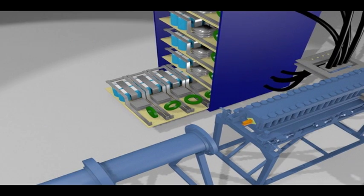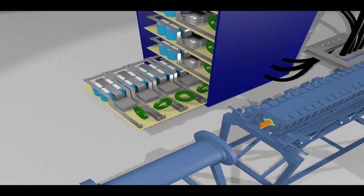As this drawer is extended, we see the PFN modules. Each module consists of capacitors, shown as blue cylinders, a semiconductor stack comprised of a power thyristor and diode, and an inductor.